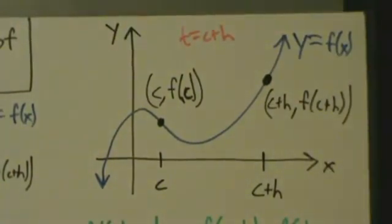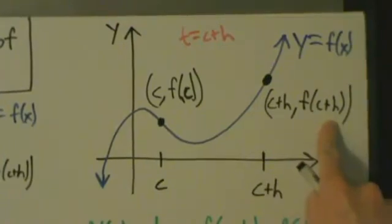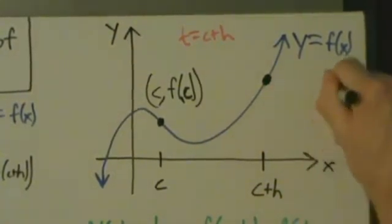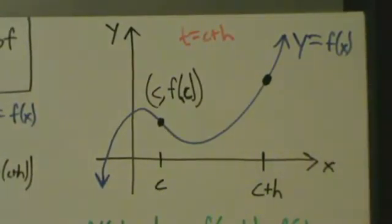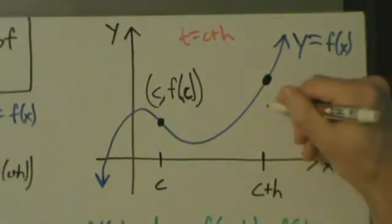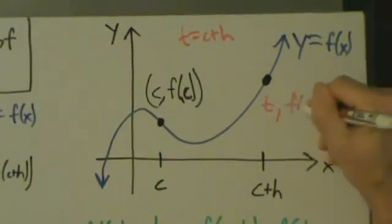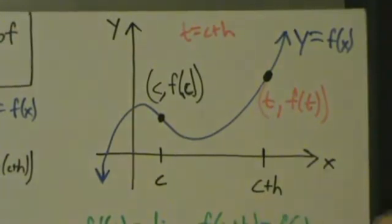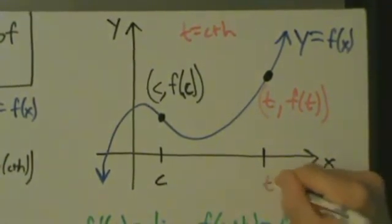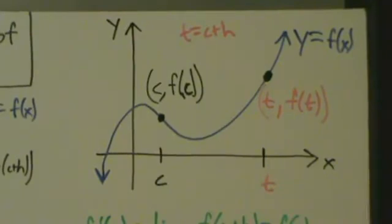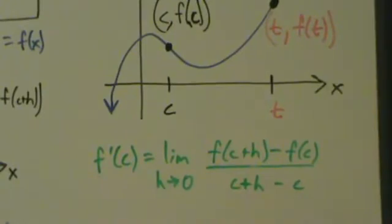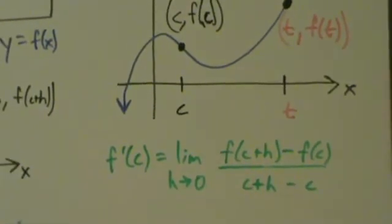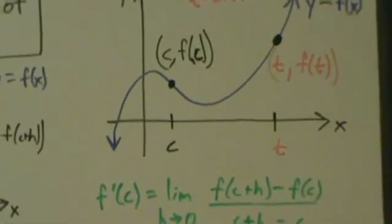Now here we're going to change things around using the substitution t equals c plus h. Right here we have c plus h comma f of c plus h — we're going to replace these c plus h's with t's. So this becomes t comma f of t. And this c plus h on the x-axis is also going to be replaced with t. So we're replacing c plus h with t. This was our old definition of the derivative, and now we're going to have a new one with our substitutions.